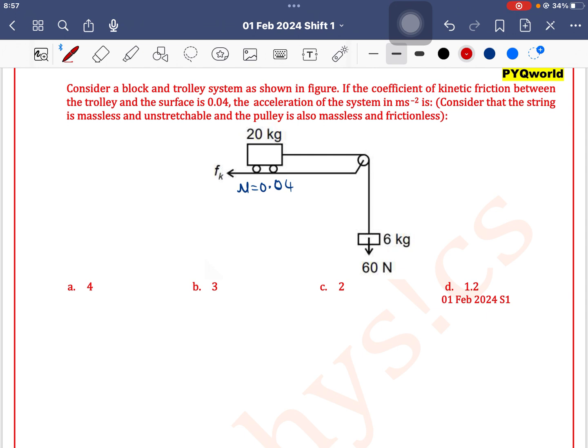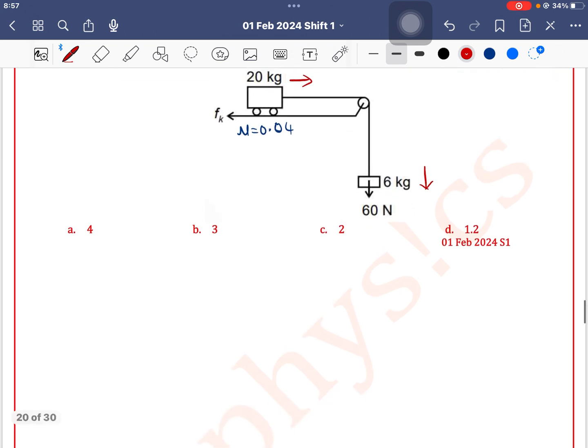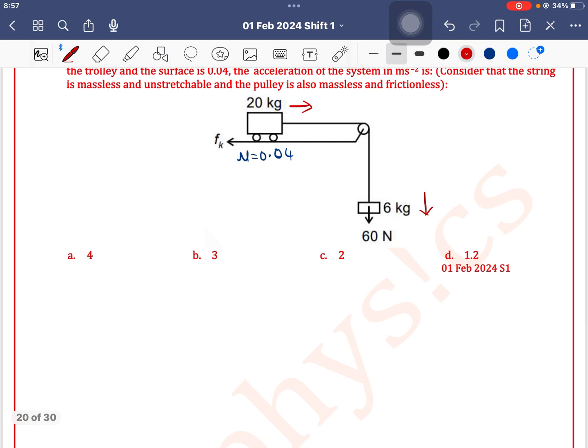This is 6 kg in the downward direction. This is 20 kg on the right side. Where is the friction? Left side. So for 20 kg, first we find the tension here. Let's say this is going down with acceleration.